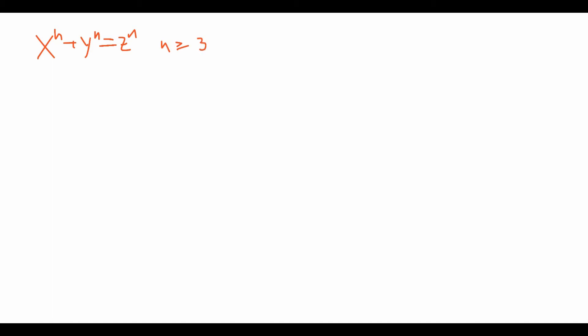We're not going to prove Fermat's Last Theorem here, but we're going to prove 25% of it. That is, we're going to prove the case when 4 divides n. So when n is equal to 4m for some positive integer m, we're going to prove that this equation has no solutions in positive integers. The first thing we want to do is reduce this to something we can do in a finite amount of time, because right now there's an infinite number of n that we need to check.